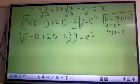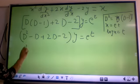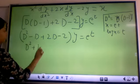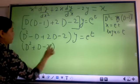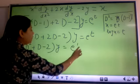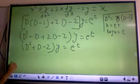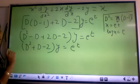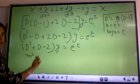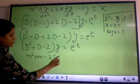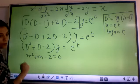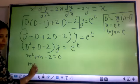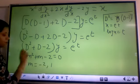So we will solve it by using the concept of CF and PI. To get the CF first you will write the auxiliary equation. Your auxiliary equation will be m² plus m minus 2 is equal to 0. If you solve this, this will give you m is equal to minus 2, 1.